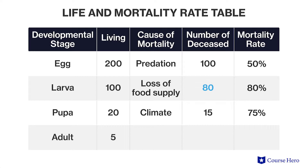80 larvae die, and the remaining 20 develop into pupae. But a late snowstorm freezes 15 of the 20 pupae, or 75 percent of them. Only five of the original 200 insects in the group survive to adulthood.